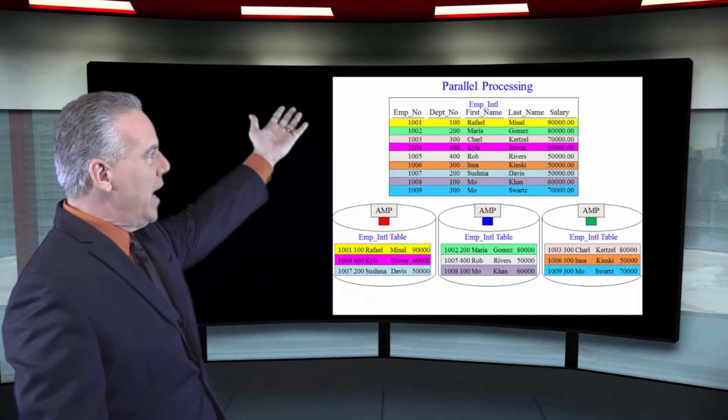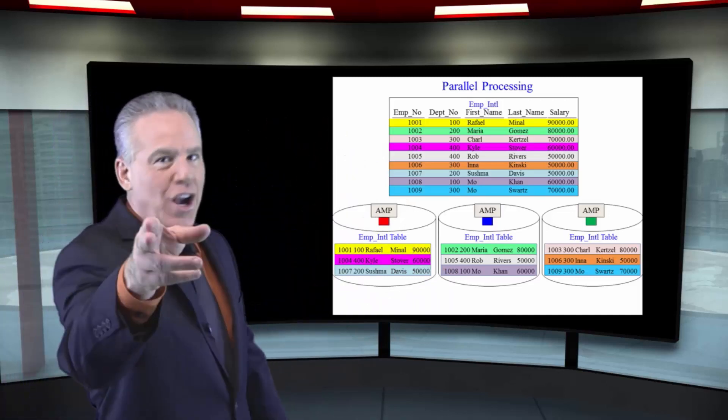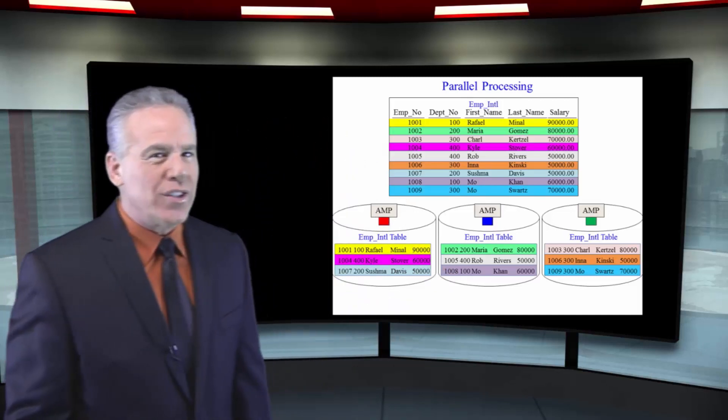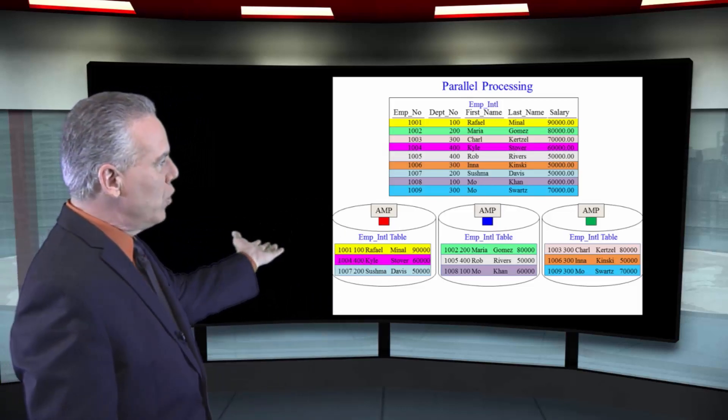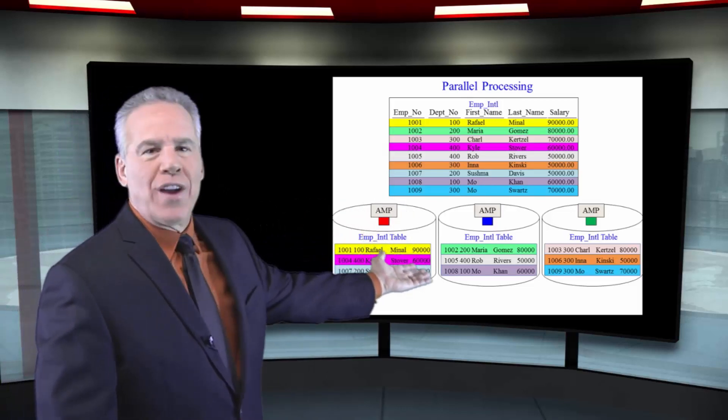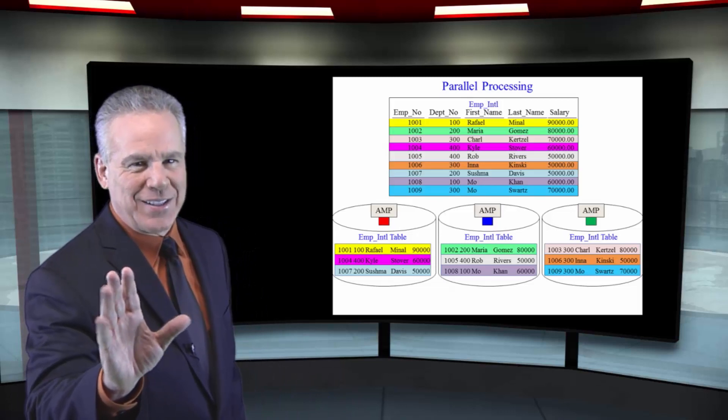As you can see here, I've got a table with nine rows. I color coded this for you so you can see each row. And I want to really point out that in this case, I've got three AMPs. You'll have more AMPs in your Teradata System.